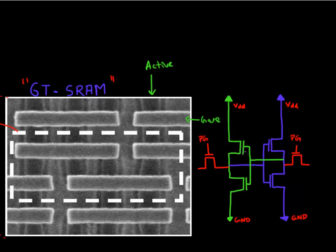We see that this inverter has — so the gate of these two transistors must be connected, and they must be connected to the source and drain of the other two transistors. The two transistors shown in green can be located here — there's a gate line running here, so this is one green transistor and this is the other.